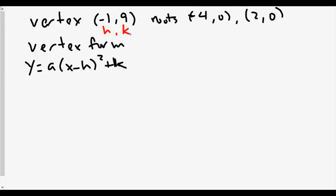Our other point we're looking for is X comma Y — we can choose either negative four comma zero or two comma zero. I'll go with two comma zero. So our X value will be two and our Y value will be zero. Now we're going to plug into our equation.